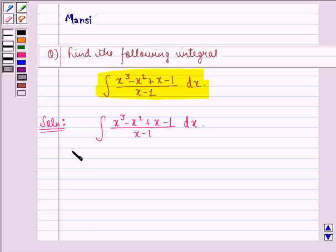Now this can be written as the integral of x²(x - 1) + 1(x - 1) divided by x - 1, dx. We have written this because taking x² common from the first two terms we get x - 1, plus taking 1 common from the last two terms we get x - 1.